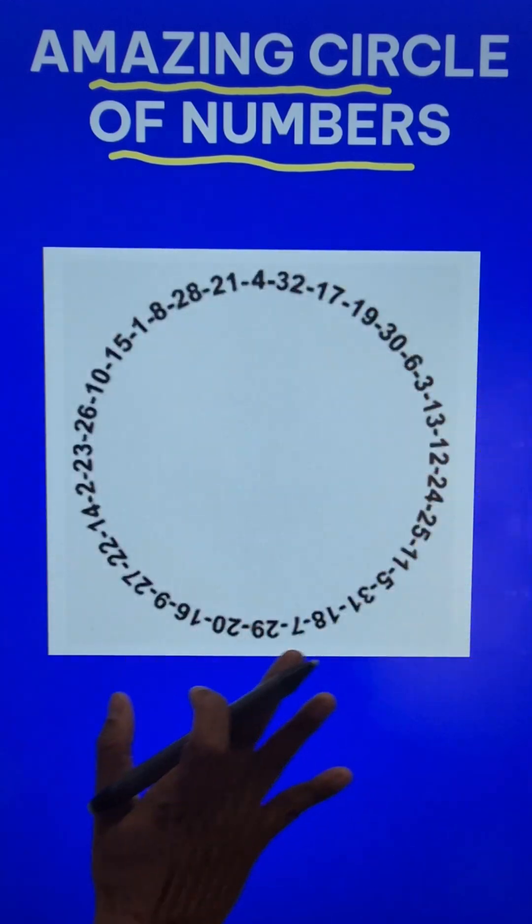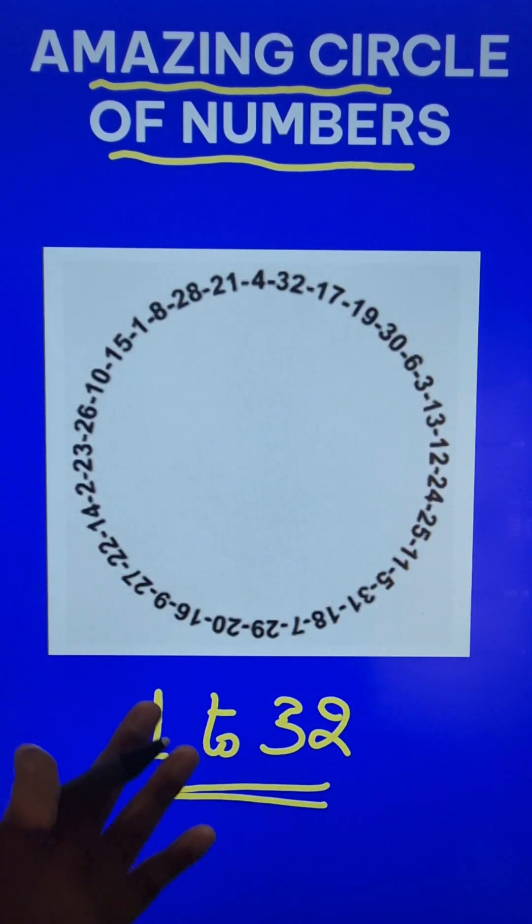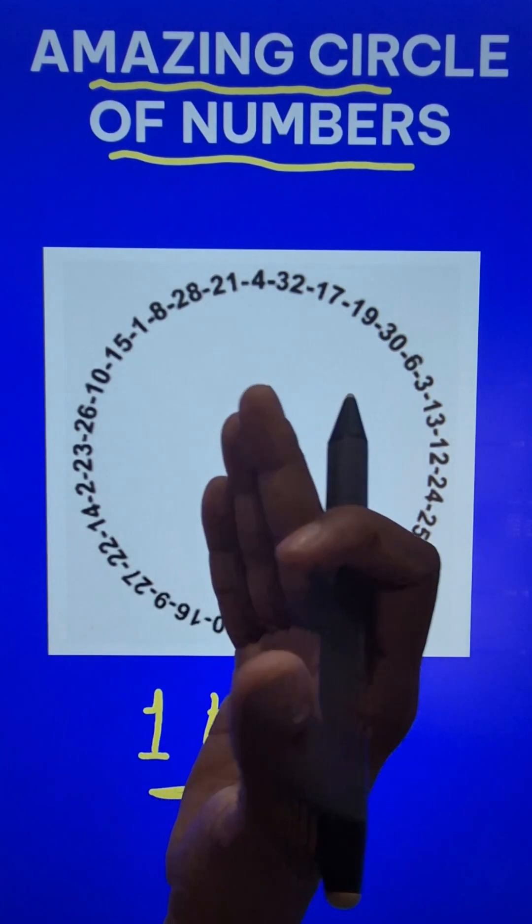If I tell you which numbers are used here, they are all the numbers from 1 to 32, and all these numbers are arranged in a particular manner so as to satisfy a particular rule.